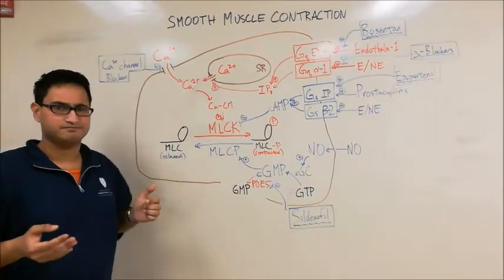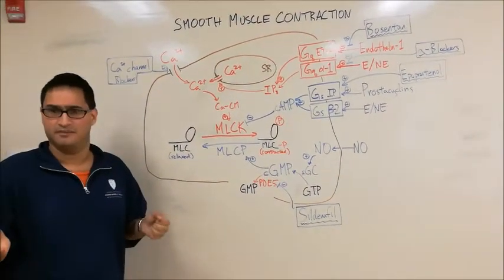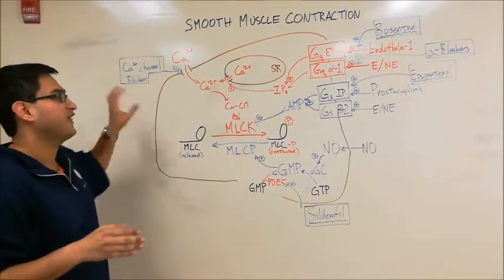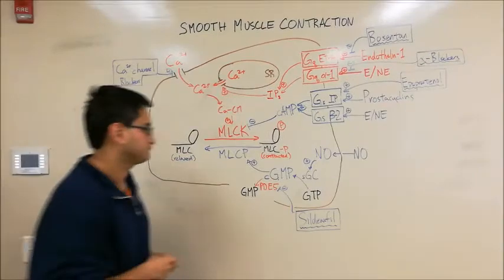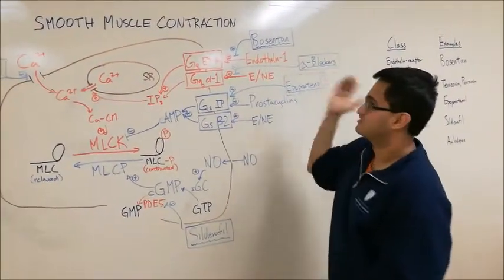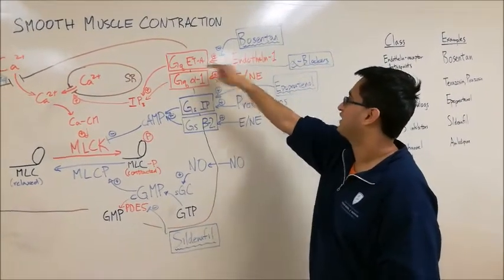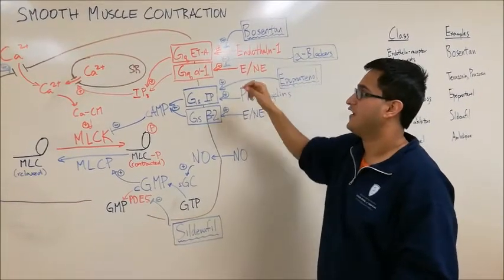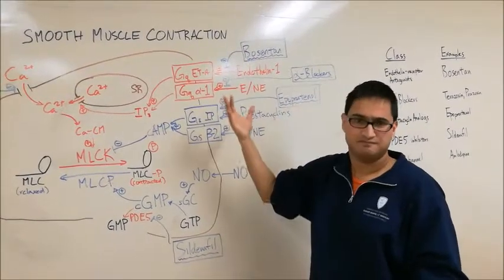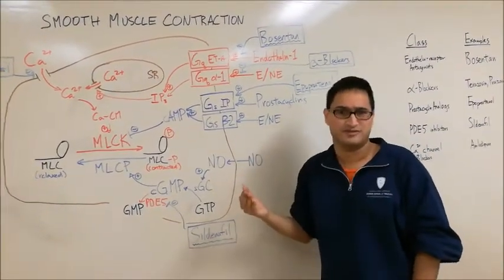There are calcium channel blockers that focus more on smooth muscle and some that focus more on the heart, but they can be used for blood pressure control. Bosentan is an endothelin-A receptor antagonist — it competitively binds to the receptor and blocks endothelin-1, preventing it from promoting vasoconstriction and therefore promoting vasodilation. Bosentan is used therapeutically in the treatment of pulmonary hypertension.